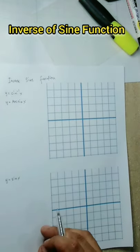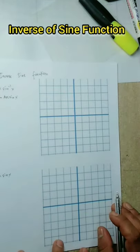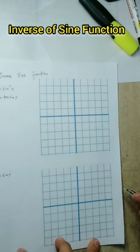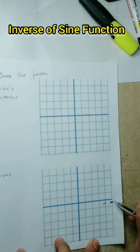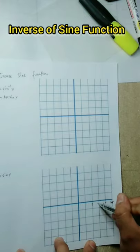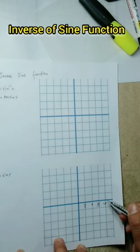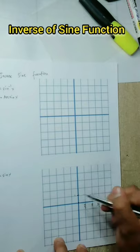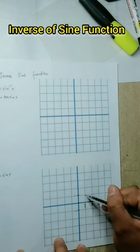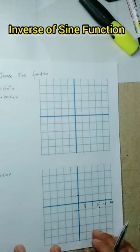In our previous lesson, we discussed how to graph the six trigonometric functions. Yung sine function natin mayroon pong period na 2π. So ilalagay ko muna dito — this is π/2, this is π, this is 3π/2, this is 2π — isang cycle po yan. We start sa center, mayroong maximum point na 1, mayroong minimum point na negative 1. So: center, maximum point, center, minimum point, back to the center — isang cycle po yan ang graph ng sine function. Maglalagay rin ako ng graph to the negative side of x: negative π/2, negative π, negative 3π/2, negative 2π.